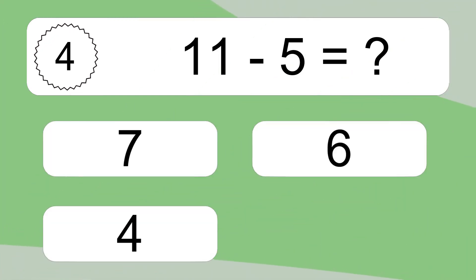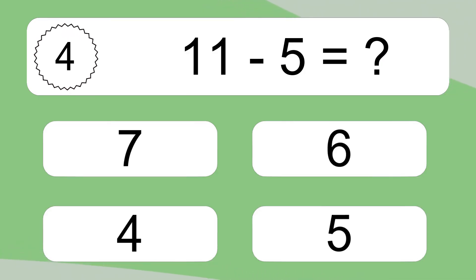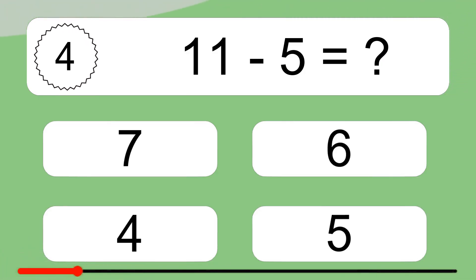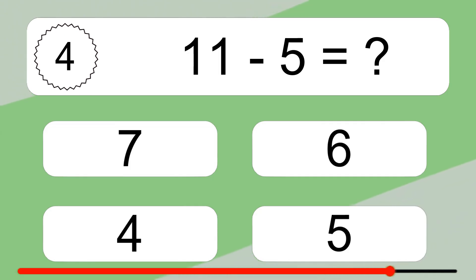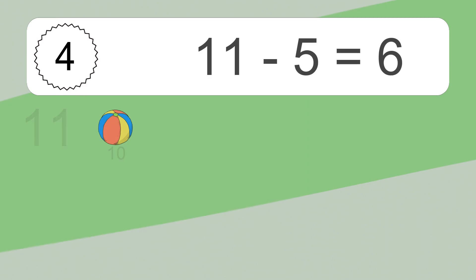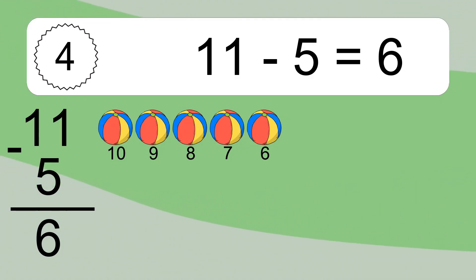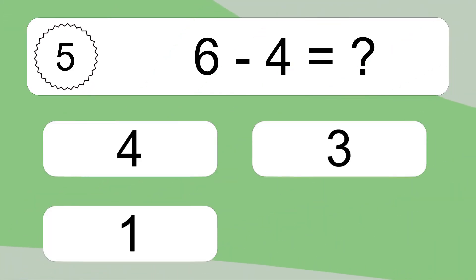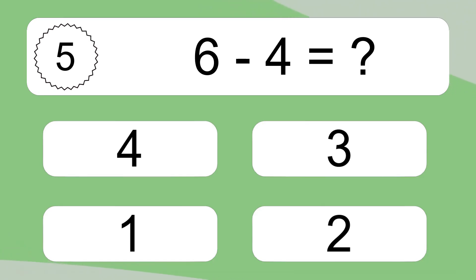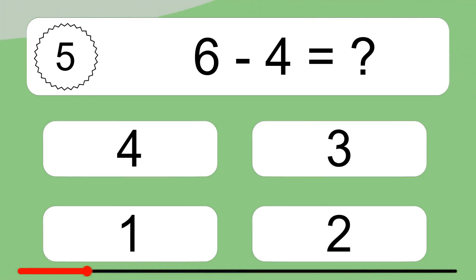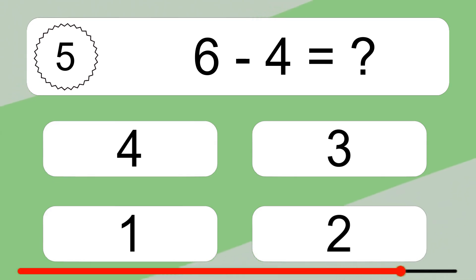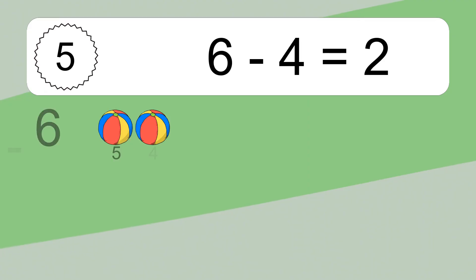11 minus 5 equals what? 11 minus 5 equals 6. Let's count it: 10, 9, 8, 7, 6.